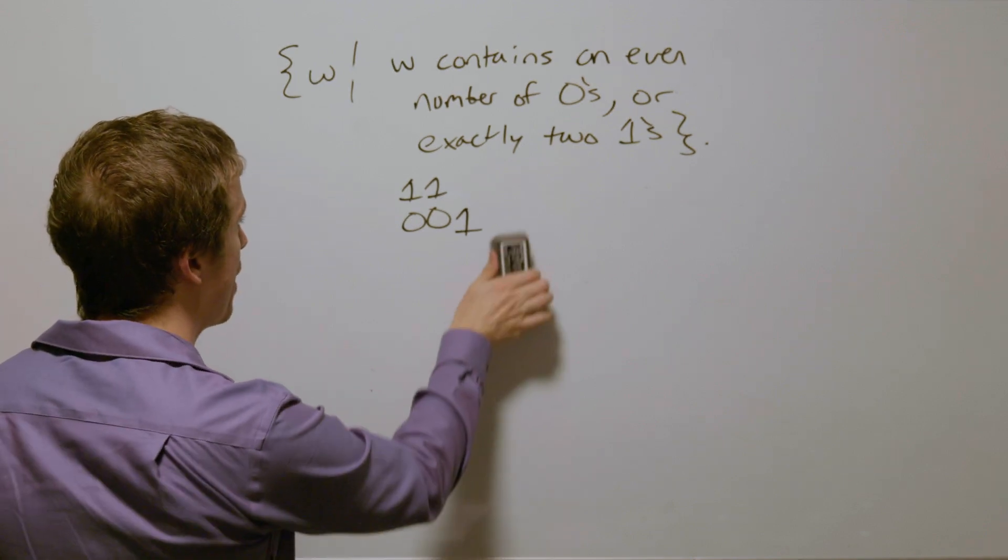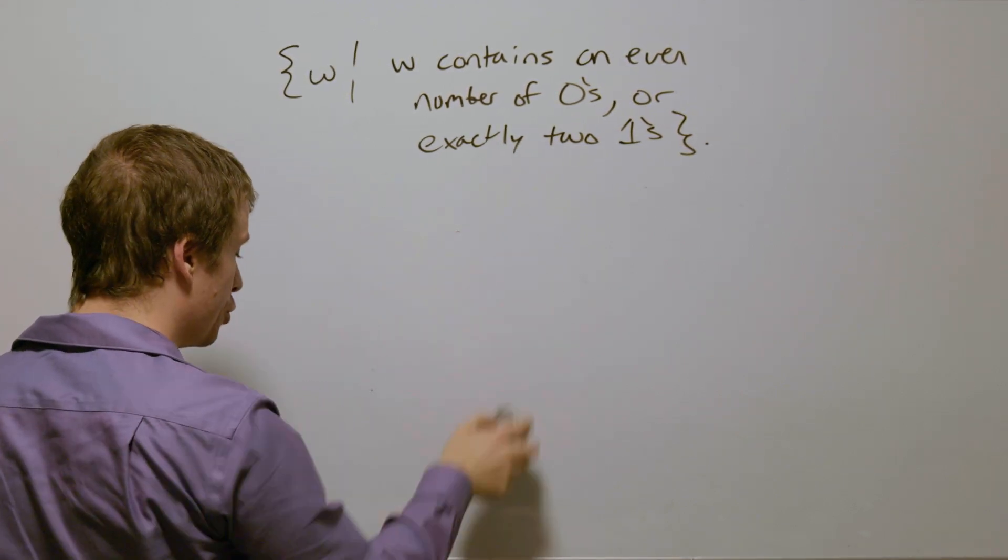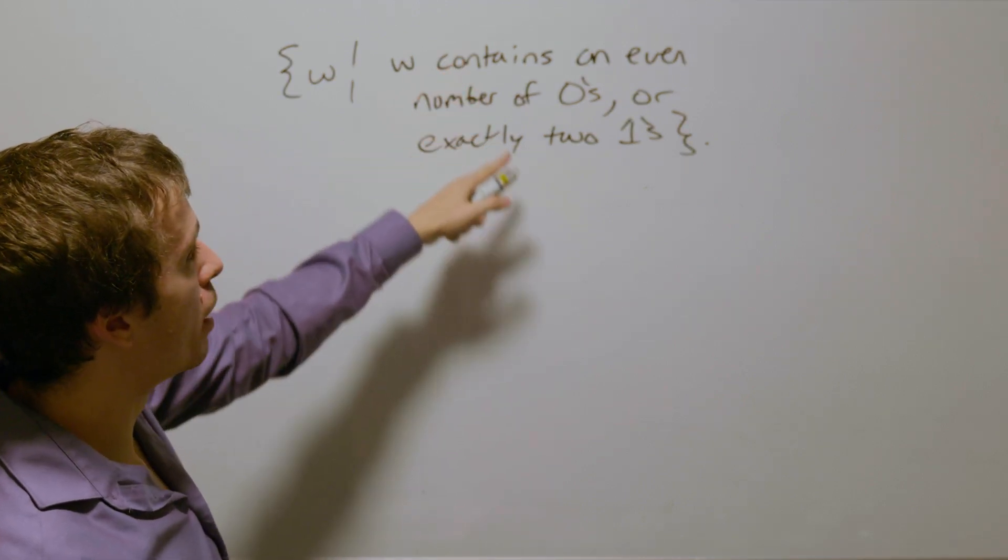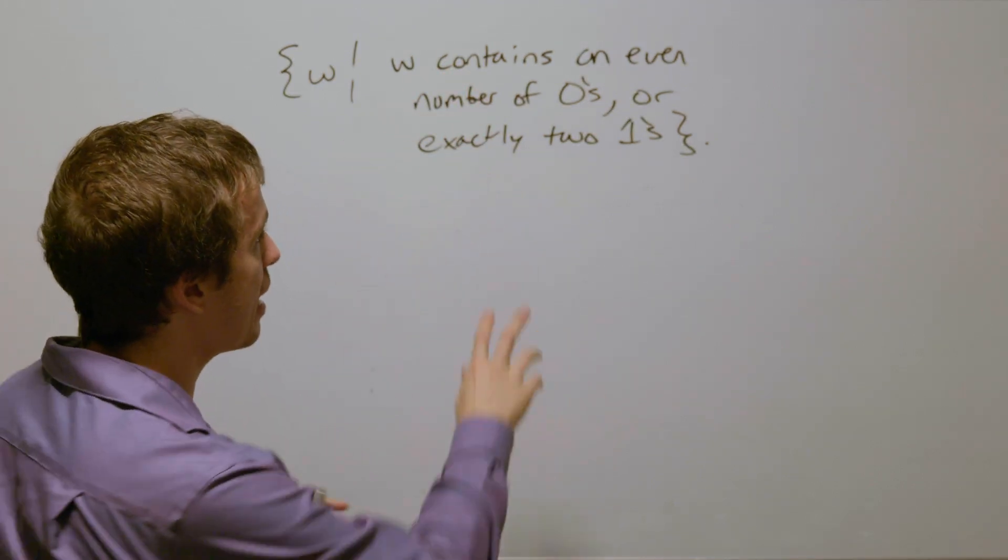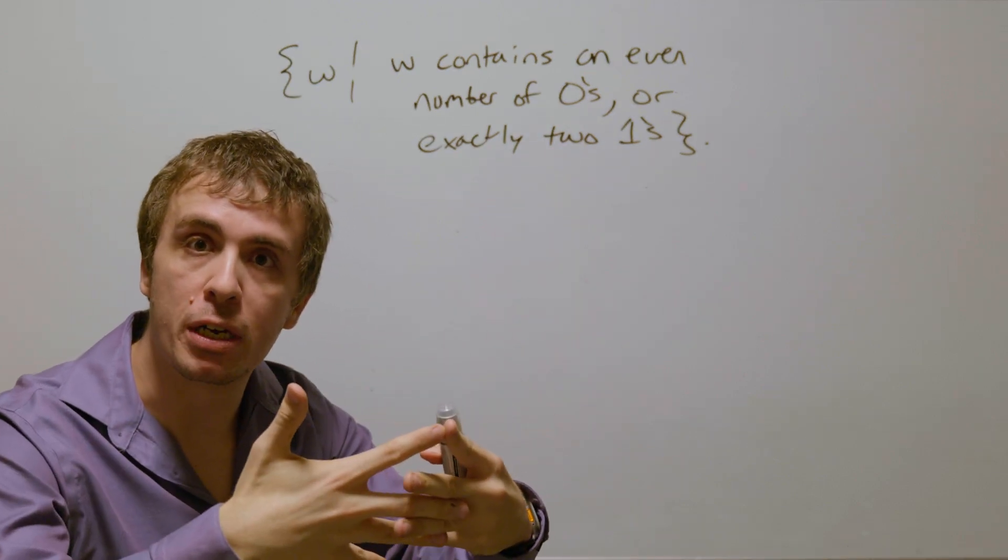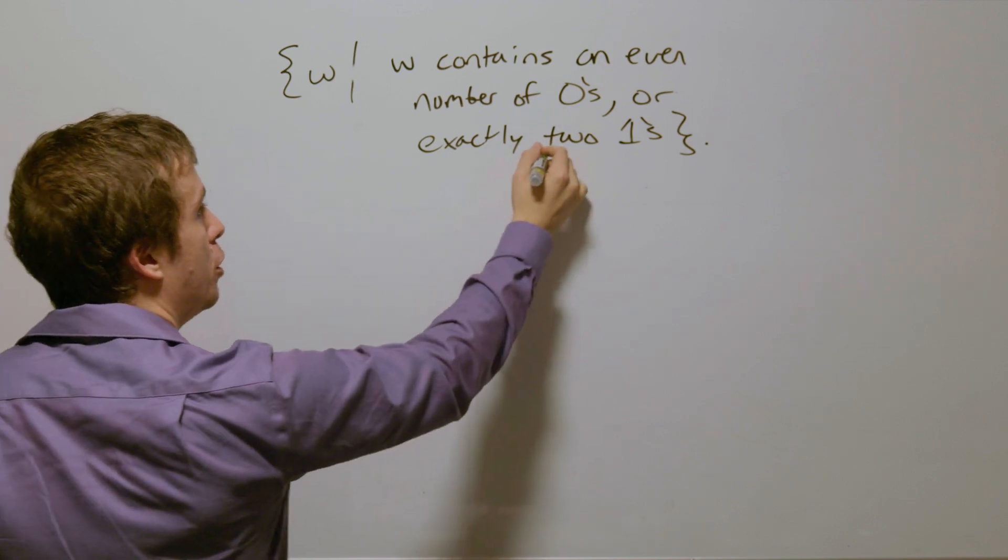So how are we going to build a DFA for this? Let's use the product construction, where we're going to build a DFA for this first part, and then independently make a DFA for this, and then use the product construction for the union of the two.